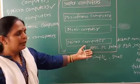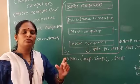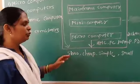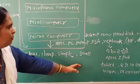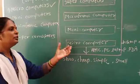What is meant by micro computer? Micro computer is very slow, very cheap, simple and very small. This is the most important thing.